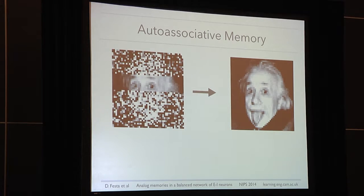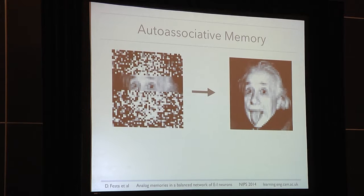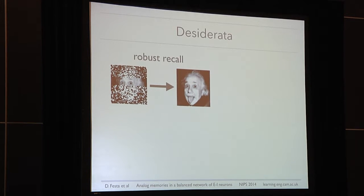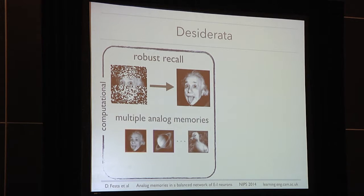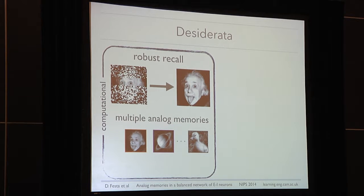The first feature of interest is the capacity of robust recall that you saw in the short animation. The second computational feature is the presence of multiple memories within the same system. Third, neurons are not binary units — they express information through a spiking rate. Therefore, we want memories to be analog.